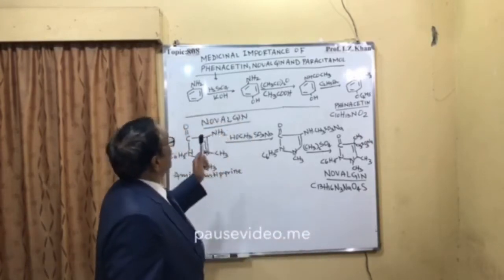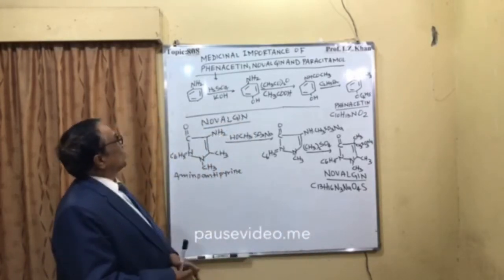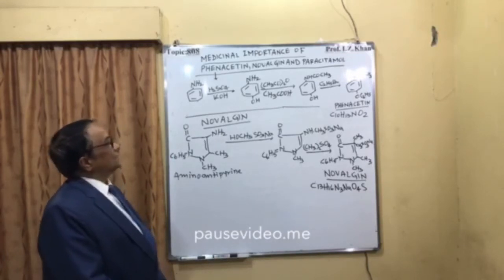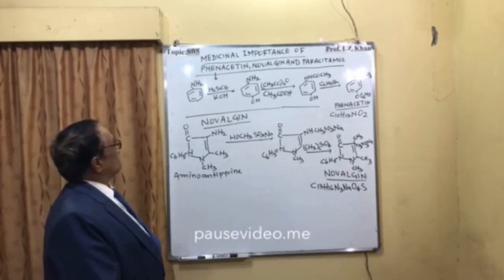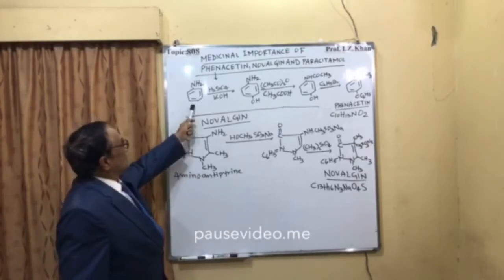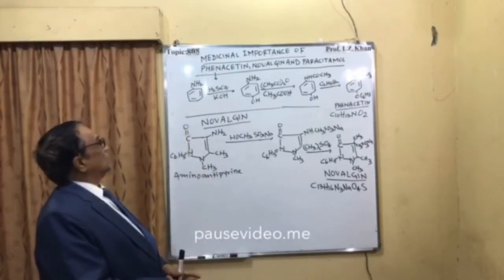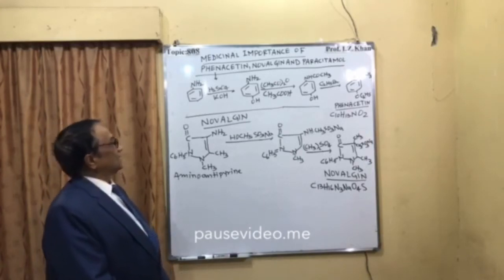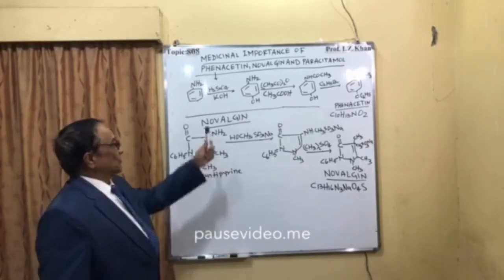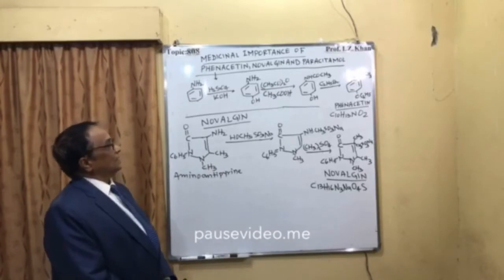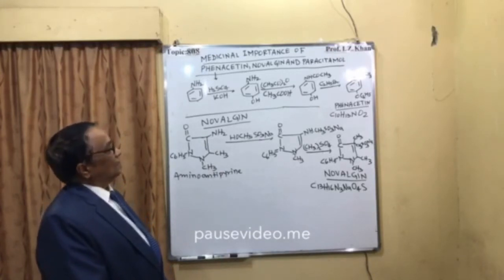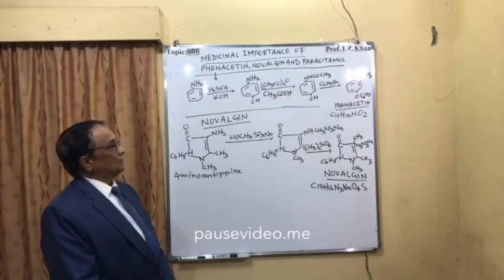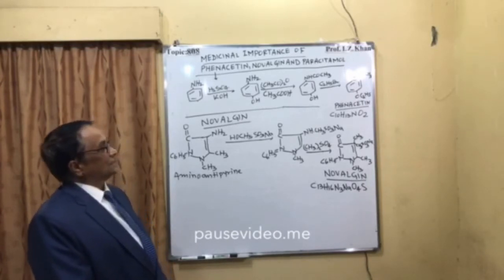This is the medicinal importance of phenacetin, Novalgene, and paracetamol. Novalgene, once treated with potassium hydroxide, is changed into a phenolic form, and then when treated with ethyl bromide, it is converted into phenacetin.